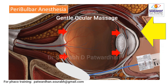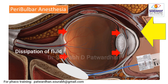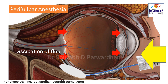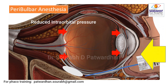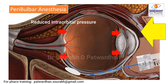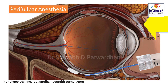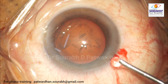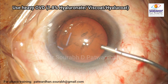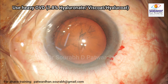So what should we do to avoid this? Do some gentle ocular massage after peribulbar injection so there is dissipation of fluid and the intraorbital pressure goes down, becomes normal. I think that is very essential when you are using local anesthesia in the form of peribulbar or retrobulbar. The intraorbital pressure should come back to normal before you proceed with intraocular surgery.